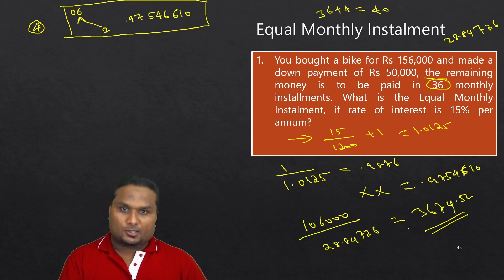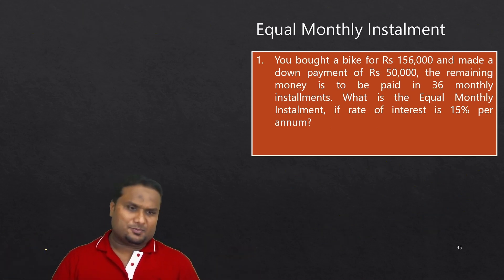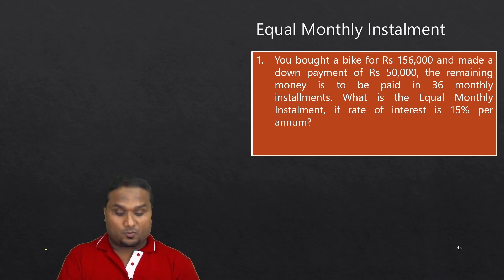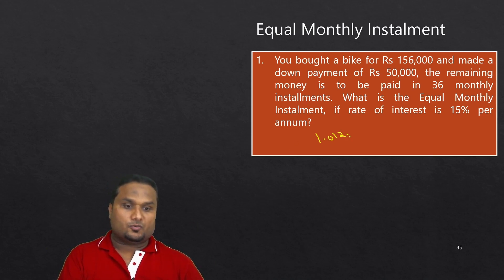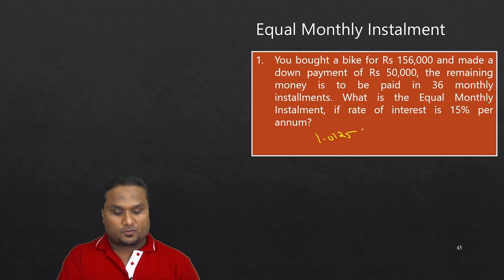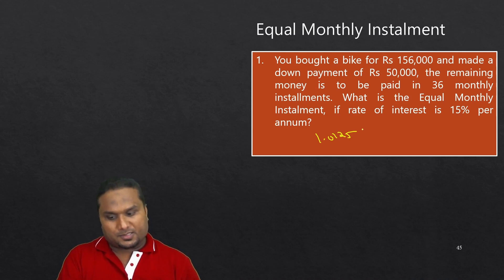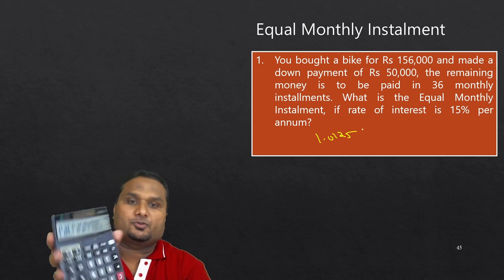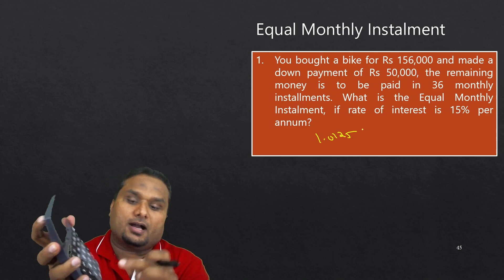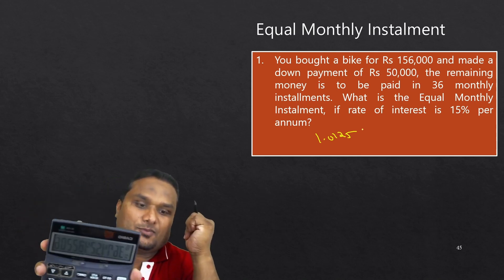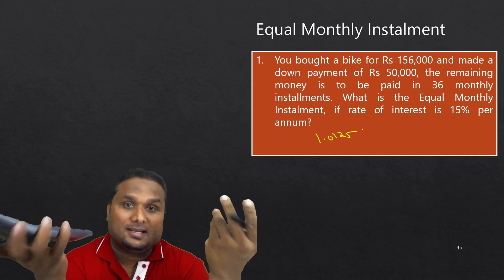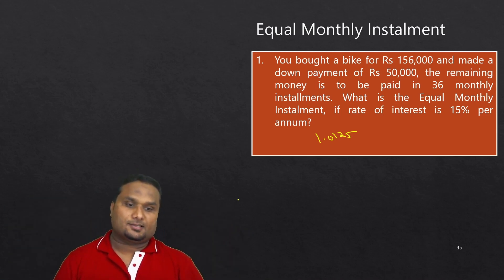Let me redo this quickly. Step 1: 15 ÷ 1200 + 1 = 1.0125. Step 2: 1 ÷ 1.0125, press equals, then multiply repeatedly until the counter reaches 40. Press GT — value is 28.847. Then divide ₹1,06,000 by 28.847. The answer is ₹3,674.